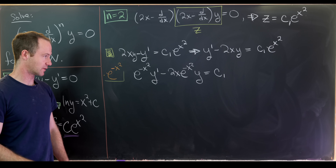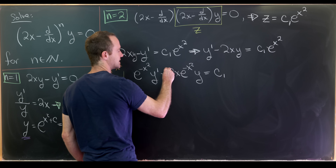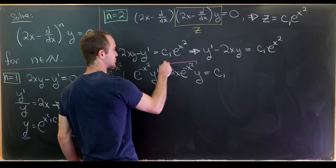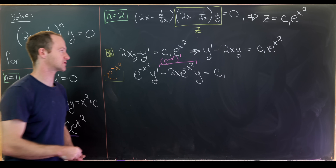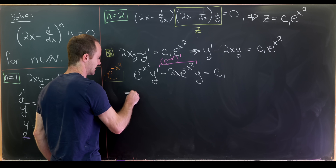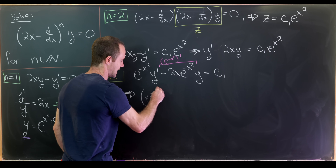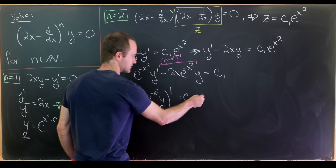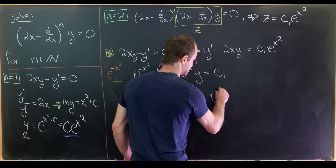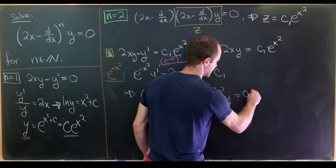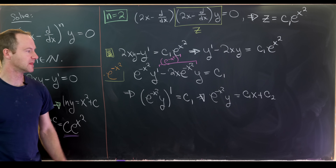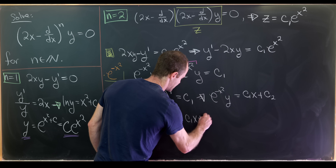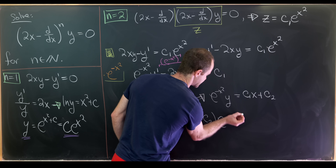The factor e to the x squared cancels on the right. Importantly, minus 2x times e to the minus x squared is the derivative of e to the minus x squared, setting up a product rule on the left side. So the left side is the derivative of e to the minus x squared times y, which equals c1. Taking the antiderivative gives e to the minus x squared times y equals c1 times x plus c2, and multiplying through by e to the x squared yields y equals (c1 x + c2) e to the x squared.